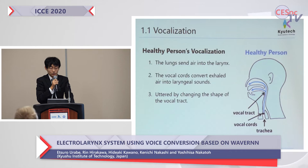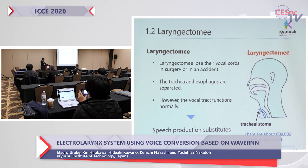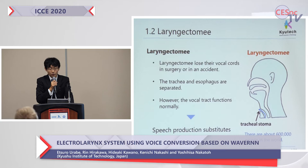This is a sequence of human vocalizations. There are 600,000 people in the world called laryngectomees. They lost their vocal cords in an accident or surgery. Also, the trachea and esophagus were separated. Therefore, they cannot speak. However, the vocal tract functions normally.